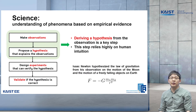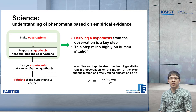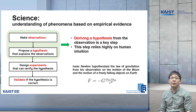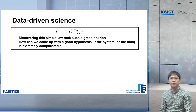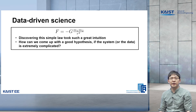For example, Isaac Newton hypothesized the law of gravitation from his observation on the motion of the moon and the motion of freely falling objects on earth. He thought those two are basically the same phenomenon that could be explained with the law of gravitation, which is a great intuition. As you can see, discovering this simple law took such a great intuition.